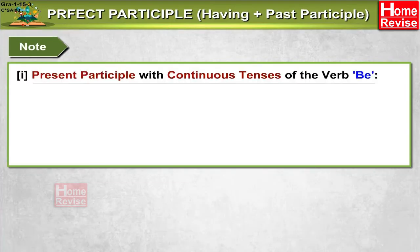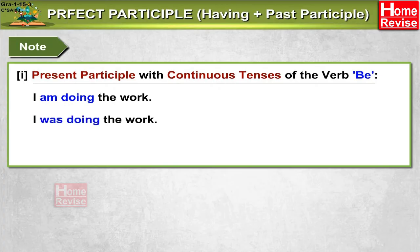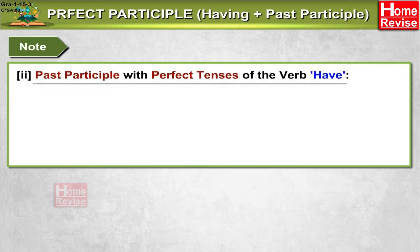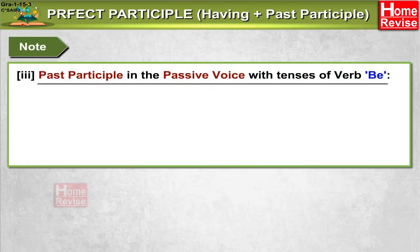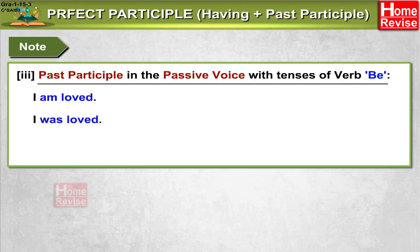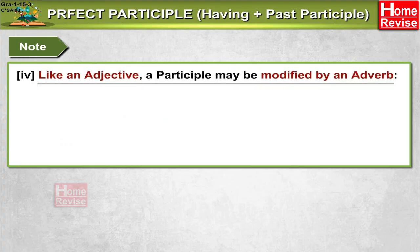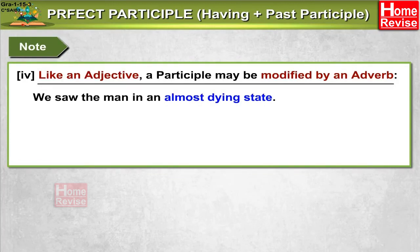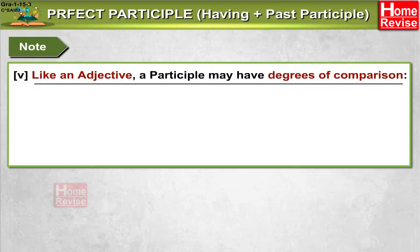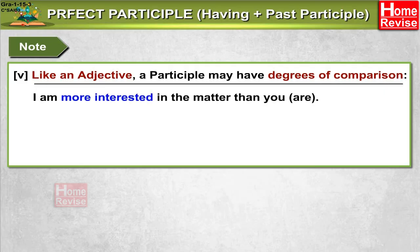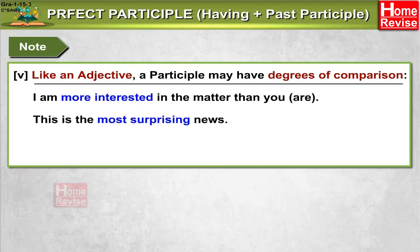Notes: First, the present participle is used with continuous tenses of the verb 'be' — 'I am doing the work'; 'I was doing the work'; 'I shall be doing the work.' Second, the past participle is used with perfect tenses of the verb 'have' — 'I have loved'; 'I had loved'; 'I shall have loved.' Third, the past participle is used in the passive voice with tenses of verb 'be' — 'I am loved'; 'I was loved'; 'I shall be loved.' Fourth, like an adjective, a participle may be modified by an adverb — 'We saw the man in an almost dying state.' Fifth, like an adjective, a participle may have degrees of comparison — 'I am more interested in the matter than you are'; 'This is the most surprising news.'